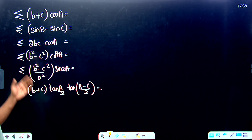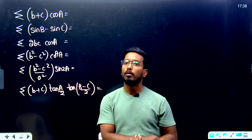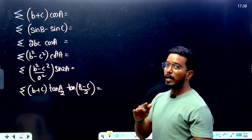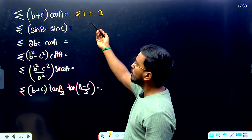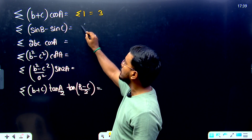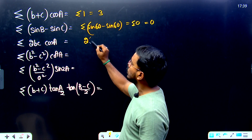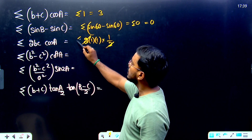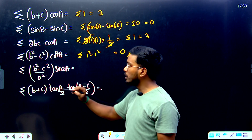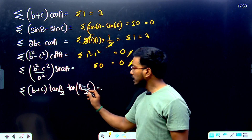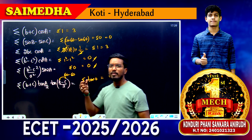Now try the practice sigma-type questions. Pause the video and solve within three seconds. (b+c) cos A = (1+1) cos 60° = 2 × 1/2 = 1, so sigma 1 = 3. For sin B − sin C: sin 60° − sin 60° = 0, so sigma 0 = 0. For 2bc cos A: 2×1×1×1/2 = 1, so sigma 1 = 3. For b²−c²: 1−1 = 0 and (b−c) tan 0 × anything = 0. All results confirmed within seconds.